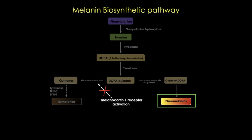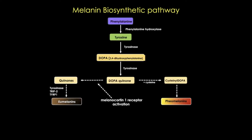People with red hair mainly present with mutations in the gene for melanocortin-1 receptor. These mutations block the switch from pheomelanin to eumelanin production. The ratio of eumelanin to total melanin determines skin color: people who produce mostly eumelanin tend to have brown or black hair and dark skin that tans easily.